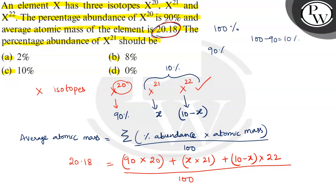Okay. We'll cross multiply the 100. So 100 into 20.18.